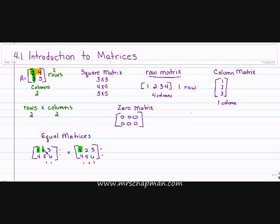One equals one, two equals two, three equals three, four equals four, five equals five, and six equals six. They are in the same position.